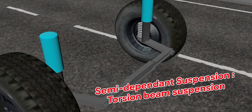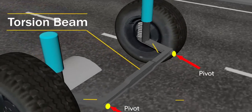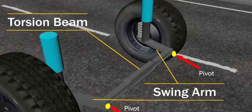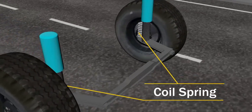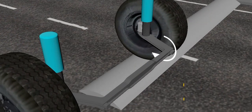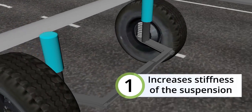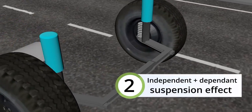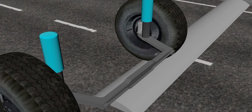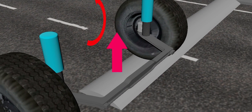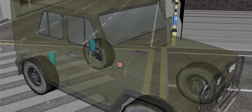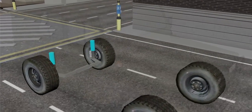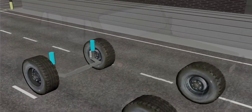Next is semi-dependent suspension: torsion beam suspension. A beam is pivoted to a frame and has a swing arm for each wheel — it's like a swing arm suspension connected with a torsion bar, preferably near the pivot. The suspension has coil springs, so on bumps and potholes the wheel moves up and down like a swing arm while the torsion beam resists that. The torsion beam does two things: it increases the stiffness of the suspension, and it gives a combined effect of rigid axle and independent suspension. This not only pushes the assembly up and down but also gives some camber change, as in rigid axle suspension, which is helpful while making a turn. The assembly also being relatively flat allows for more cabin space for passengers. This suspension assembly is widely used as the rear suspension of cars.